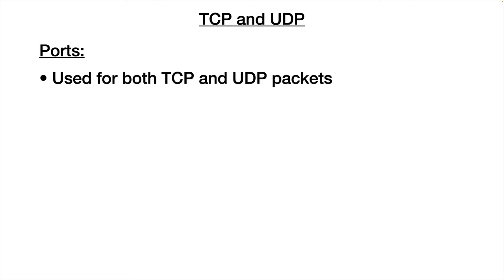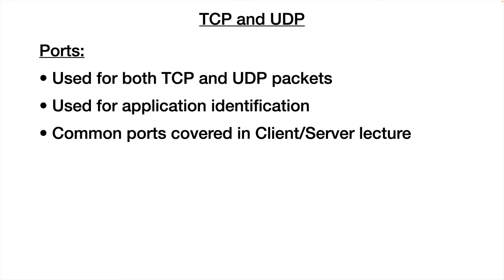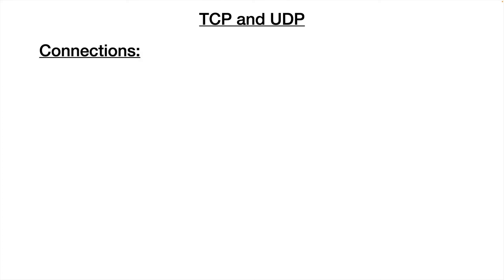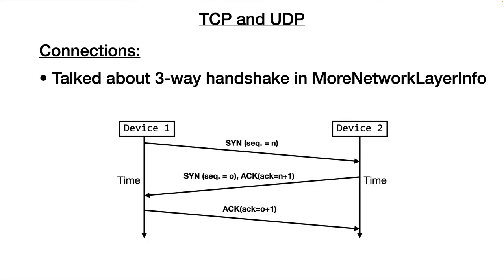Going back to ports — both TCP and UDP have ports. They're used basically for application identification. So if we connect to port 80, for example, we know that the application is a web server, if we're using well-known ports. Those well-known ports, or common ports, were covered in the client-server lecture. As far as connections, we talked about a three-way handshake, and just to refresh your memory, that uses synchronized messages and acknowledgements to make sure that packets arrive in order and intact, and that all packets arrive. So that's a little bit more information about TCP and UDP.